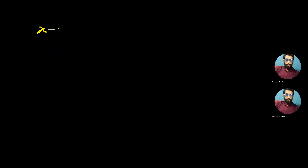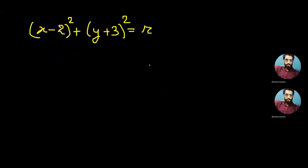In the standard form, in place of h we put 2, giving (x - 2)². For y - k, with k = -3, the minus from -3 and the minus from the formula become plus, giving (y + 3)². The radius we calculated using the distance formula was 7, so we write 7² on the right side.